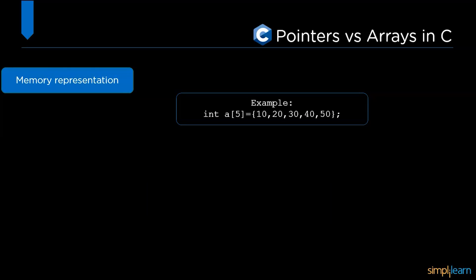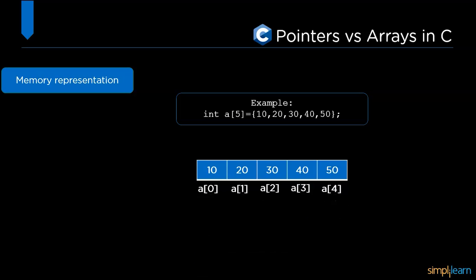Now let's look at the memory representation of an array in C. For example, int as a data type, a is an array name, and the size is 5. So here the array is initialized to 10, 20, 30, 40, and 50. As you can see, the index starts from 0 to n minus 1, which is up to 4, and all the 5 elements are allocated consecutively in the memory.